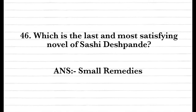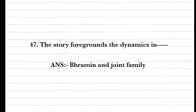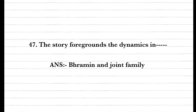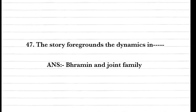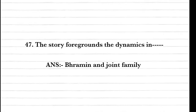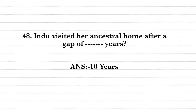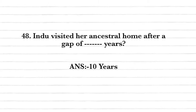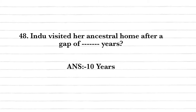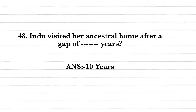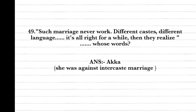Question forty-seven: The story foregrounds the dynamics in a Brahmin joint family — Roots and Shadows. Question forty-eight: Hindu visited her ancestral home after a gap of how many years? Answer: Ten years.